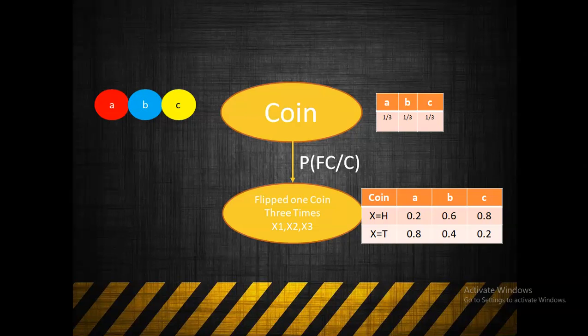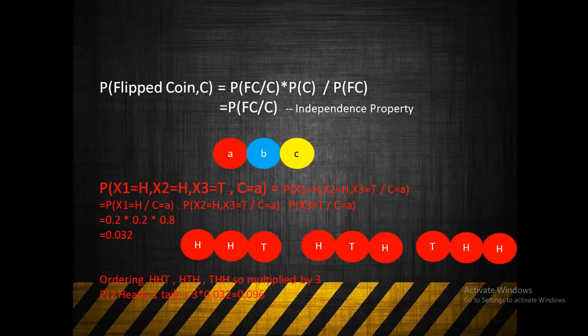Now we calculate the probability of the flipped coin outcome given the coin drawn. By the independence property, P(X1, X2, X3 | Coin) equals the product of the individual flip probabilities given the coin.